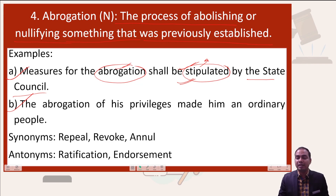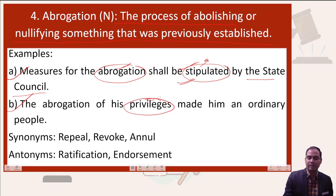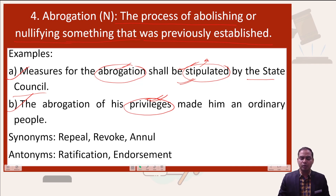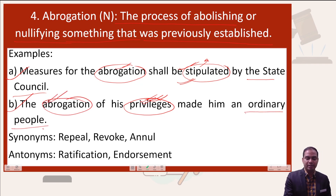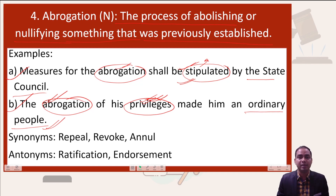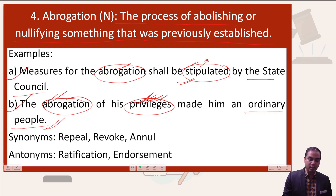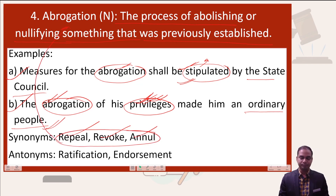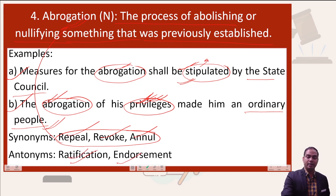Another example: the abrogation of his privilege made him an ordinary person. Some people in society receive special treatment due to their class or political background. Once that privilege is abrogated — removed — they become ordinary persons, just as a leader whose tenure ends becomes an ordinary citizen because that privilege is taken away. Synonyms of abrogation are repeal, revoke, and annul. Antonyms are ratification and endorsement, meaning to support or approve an action.